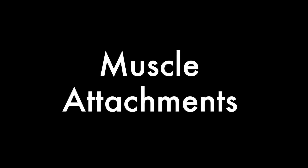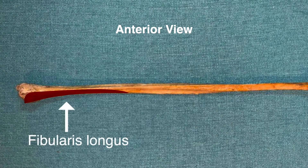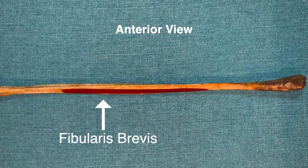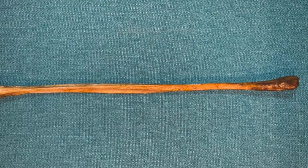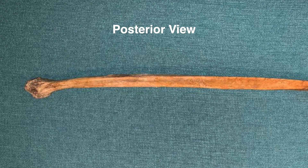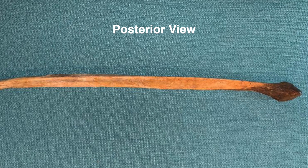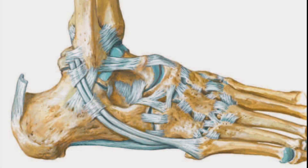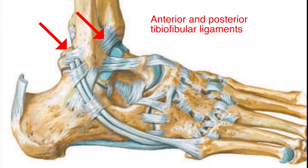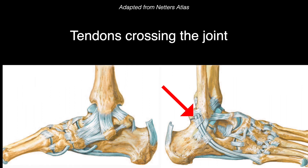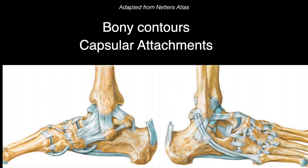The muscle attachments of the fibula can be appreciated in these images. Passive stability of the ankle joint is maintained by multiple factors which include the distal tibiofibular ligament, the medial and lateral ligament complexes, the tendons crossing the joint, the bony contours, and the capsular attachments.